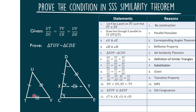Statement number 12: We can say that angle T is congruent to angle X, and angle U is congruent to angle D, by CPCTC — corresponding parts of congruent triangles are congruent. Statement number 13: We can state that angle T is congruent to angle C by the transitive property, since angle T is congruent to angle X and angle X is congruent to angle C, then angle T is also congruent to angle C.